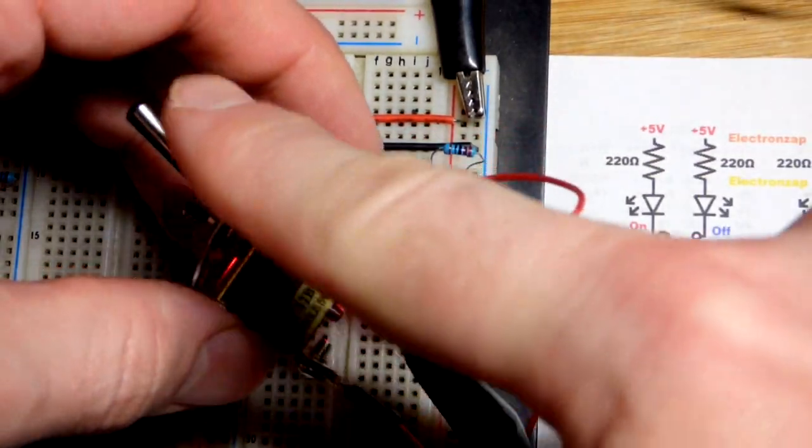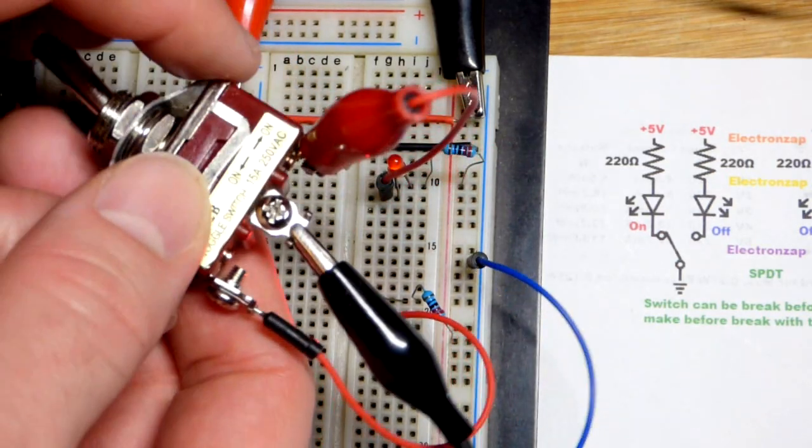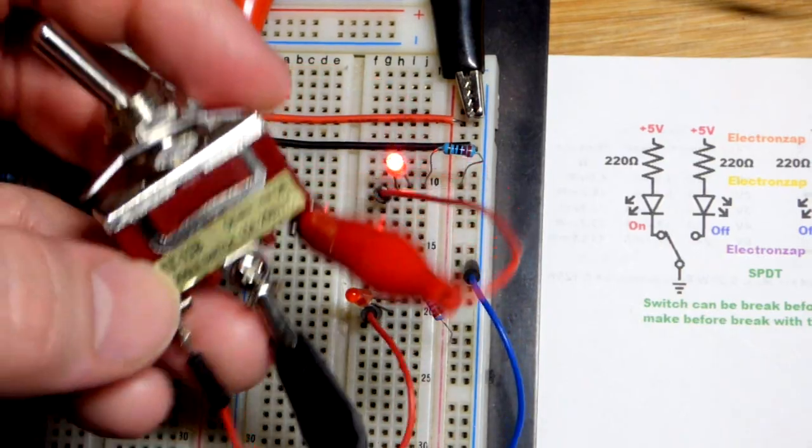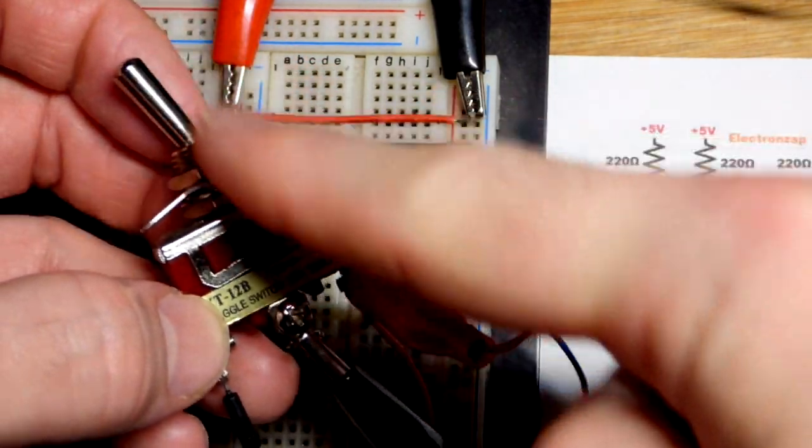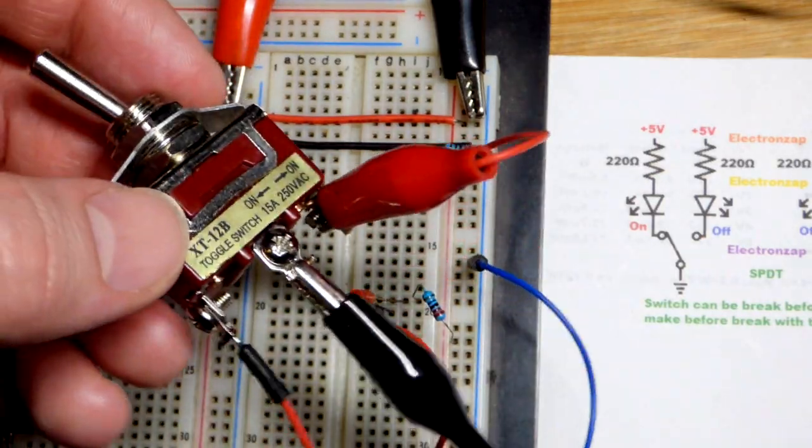So there you can see when the switch is in that position, we have our connection right there, pretty straightforward. I'll flip the switch and you can see that the other LED comes on right there. So it's making a connection over there between those two. Now that one is just floating.